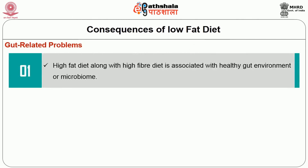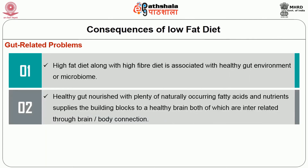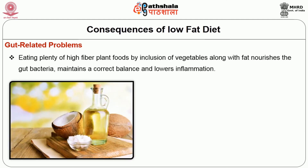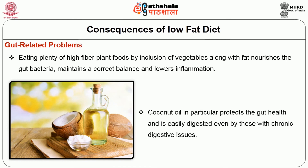High fat diet along with high fiber diet is associated with a healthy gut environment or microbiome. A healthy gut nourished with naturally occurring fatty acids and nutrients supplies the building blocks to a healthy brain through the brain-body connection. A blood sugar-controlled diet balances the gut bacteria. Eating plenty of high fiber plant foods with vegetables along with fat nourishes the gut bacteria, maintains a correct balance and lowers inflammation. Coconut oil in particular protects the gut health and is easily digested even by those with chronic digestive issues.